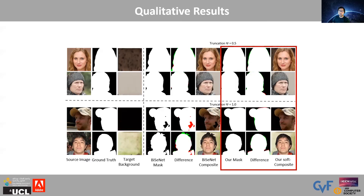Here we show some qualitative results on faces. The results in the red box show our segmentation results. We use a baseline supervised method by SNET trained on CYLAB-AHQ masks for comparison. Observe that ours are better, particularly around the hair and in cases of more ambiguous backgrounds.